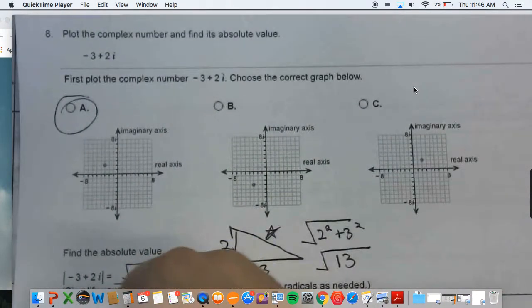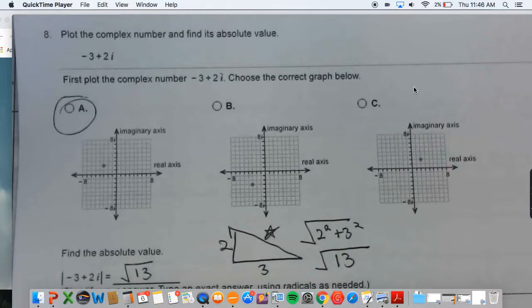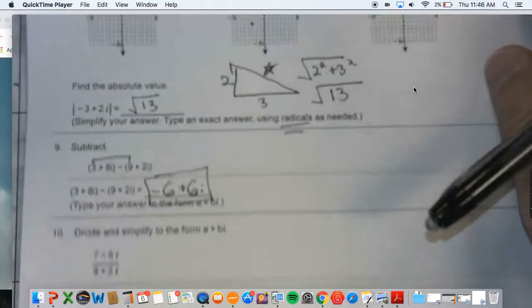Combining like terms, 3 minus 9 gets you negative 6. 8i minus 2i will then deduct 6. Sorry. 8i minus 2i gets you 6i. So done. That's it. Oh, you should probably want to see the problem, right?